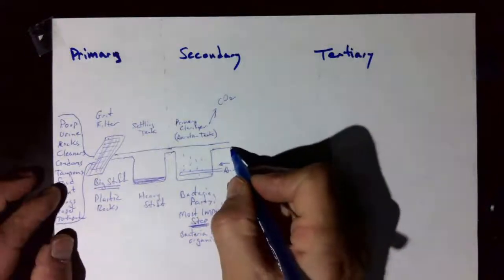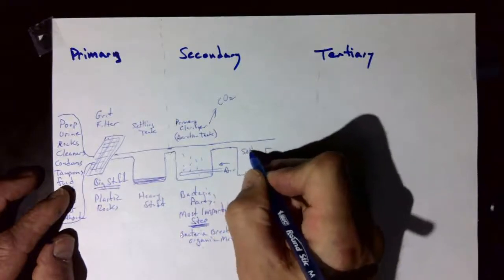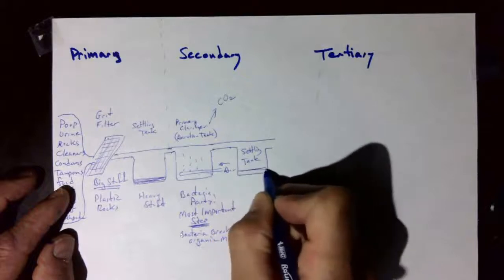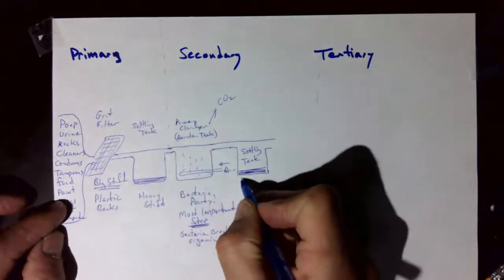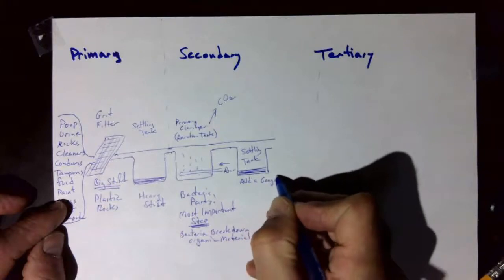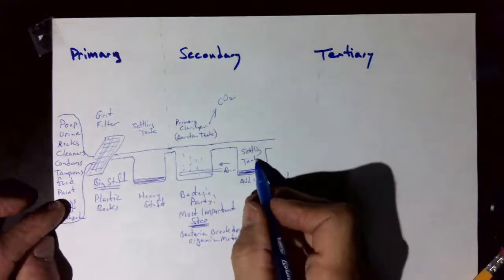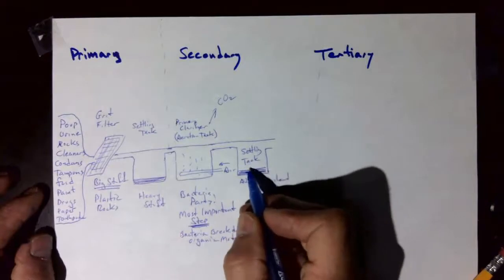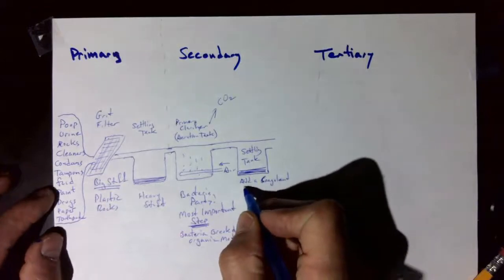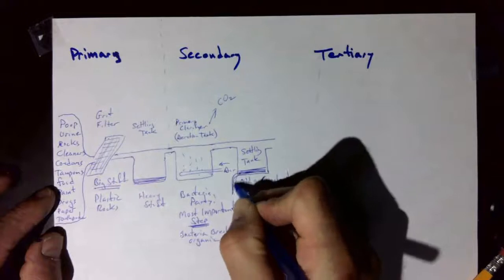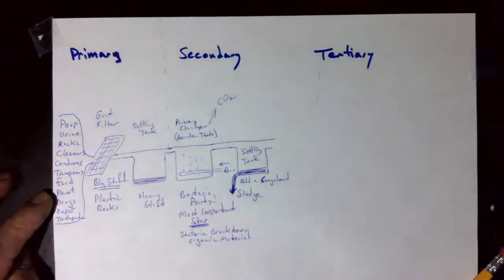And again, what nature would do is it would just put it through another settling tank, another little lake settling tank. This settling tank, the particles are much smaller than in this one, so it needs a little help. We're going to add a coagulant. A coagulant is something like alum, which is a mineral that just kind of helps things stick together. It's kind of a catalyst to make the little things turn into big things so that they stick together. What comes out of here is sludge. They call that sludge.